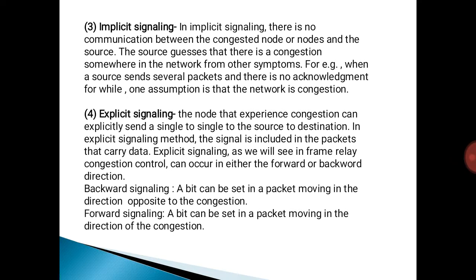Fourth is explicit signaling. The node that experiences congestion can explicitly send a signal to the source or destination. In explicit signaling, the signal is included in the packets that carry data. Explicit signaling can occur in either the forward or backward direction. In backward signaling, a bit is sent in a packet moving in the direction opposite to the congestion, whereas in forward signaling, a bit is sent in a packet moving in the direction of the congestion.